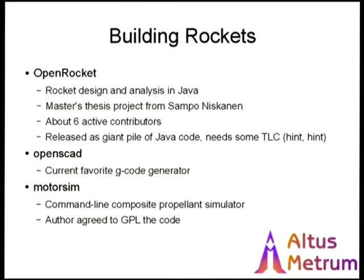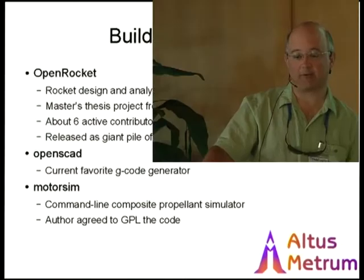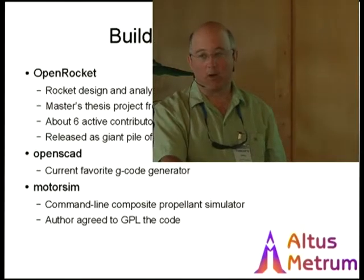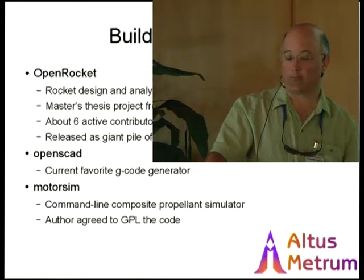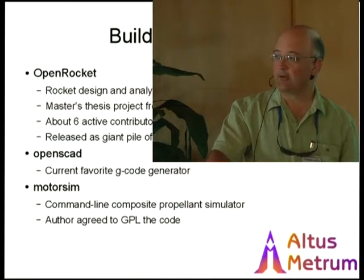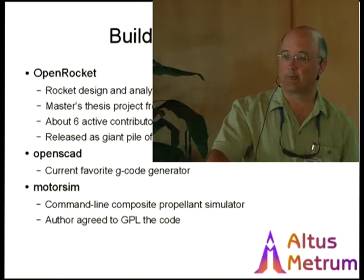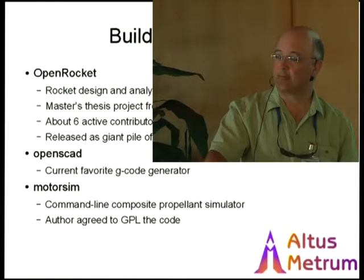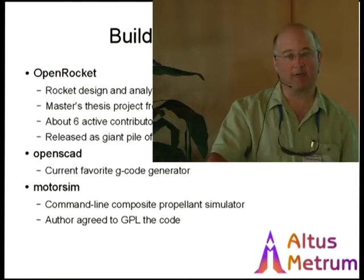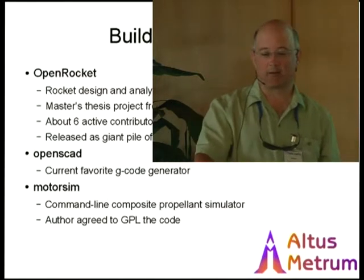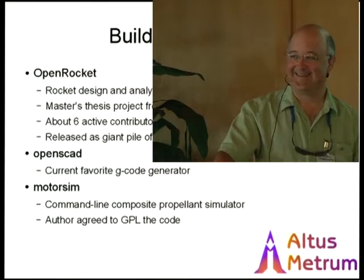Another program we use to design and build rockets is called OpenSCAD — a really fun script-based 3D modeling tool. You don't draw your object; you write code to generate your objects. BDL and his son have a lot of CNC machines, and they're using this to generate the g-code necessary to carve out rocket parts automatically. If you have a computer controlling your milling machine to generate rocket parts, you can generate a lot more precise, reproducible rocket parts.